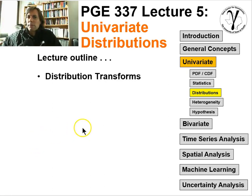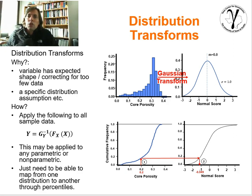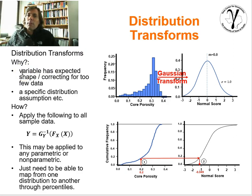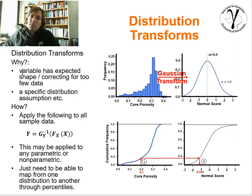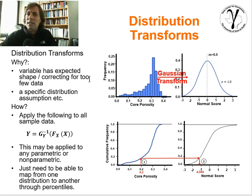Let's finish off our description of distributions with the topic of distribution transforms. This will be pretty quick. In the next sections we'll get into heterogeneity and then hypothesis testing. Why would you want to transform a distribution to another distribution? The first reason would be that the variable you've sampled has an expected shape — some theoretical reason or other information tells us the distribution should have a specific shape or form, and we're correcting data that was probably coming from too few samples to see that shape. It's noisy and we're fixing it to honor that distribution shape.